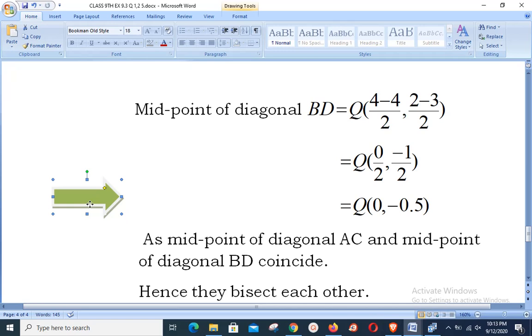So we observe that as the midpoint of diagonal AC and midpoint of diagonal BD coincide, hence they bisect each other. Hope you all understand the midpoint formula and the three questions of Exercise 9.3. Take care of yourself. Thank you very much.